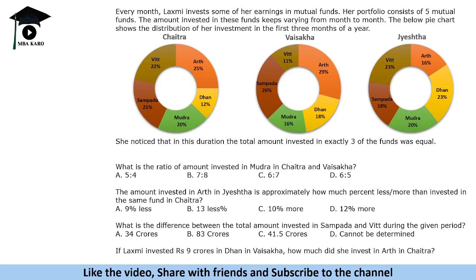The problem states that a lady, Lakshmi, invests in five different mutual funds for three months: Chaitra, Vaishak, and Jayst. In the pie chart, the total amounts invested are not given, so we assume she invests 100x in Chaitra, 100y in Vaishak, and 100z in Jayst as the total amounts.